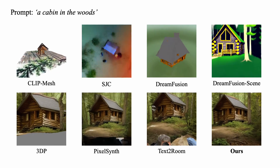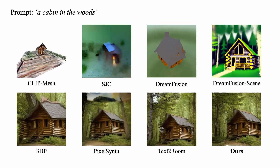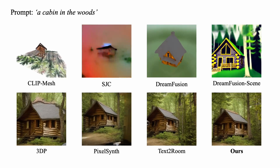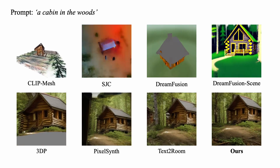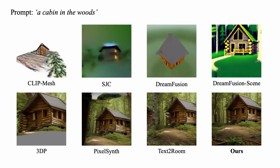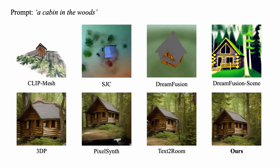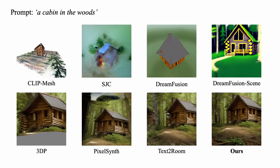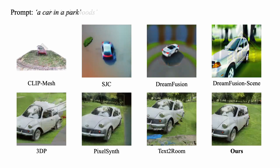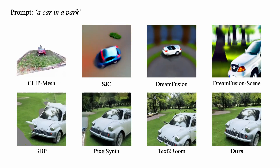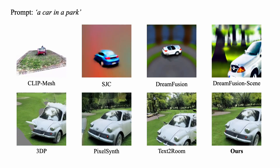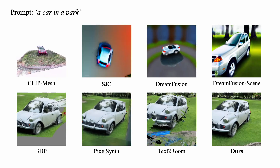Unlike existing text-to-3D methods guided by deep semantic priors, novel view synthesis methods 3DP and PixelSynth achieve photo-realistic text-related 3D scenes with textural details, since they leverage low-level content and depth priors to guide the 3D generation. However, since their scene extrapolation is implemented within a limited view range and is independent of the input prompt, they cannot generate semantically consistent content in some novel views of the scene.